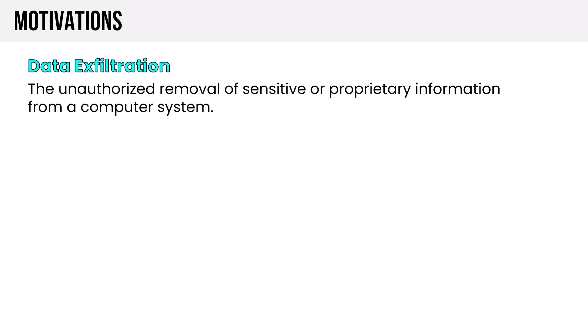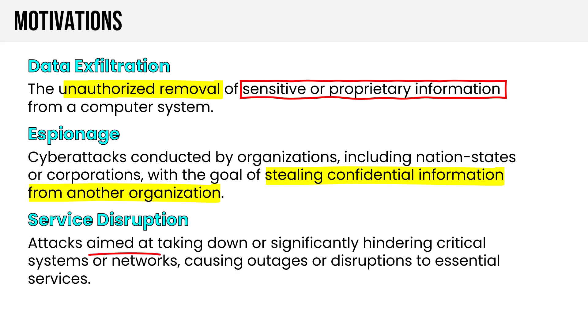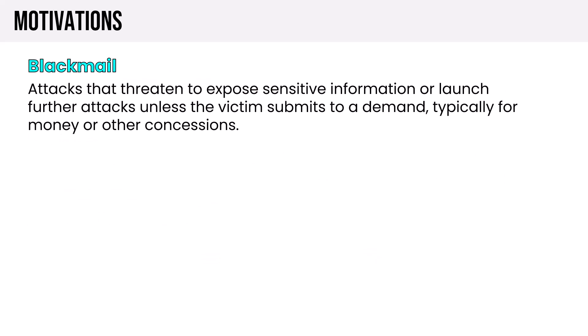Now let's walk through the motivations on the syllabus. Data exfiltration is the unauthorized removal of sensitive or proprietary information from a computer system. Espionage is conducted by organizations including nation-states or corporations. Service disruption is aimed at causing outages to essential services. Blackmail involves attacks that threaten to expose sensitive or embarrassing information unless the victim submits to a demand — typically for money or other concessions.